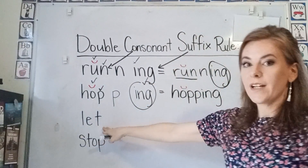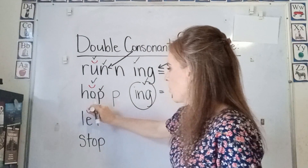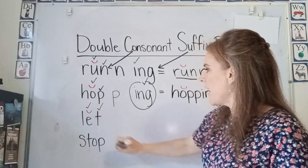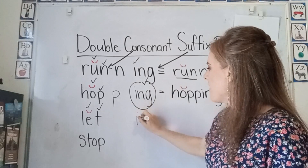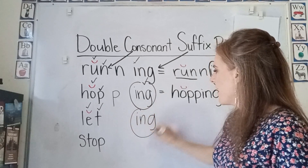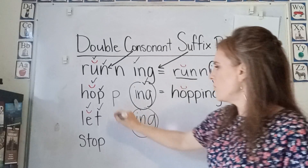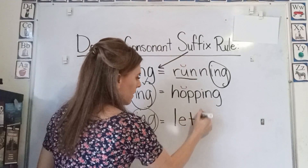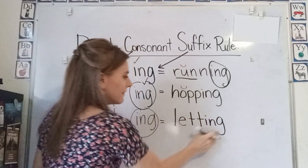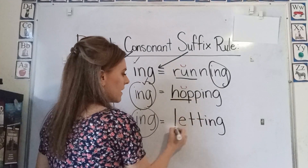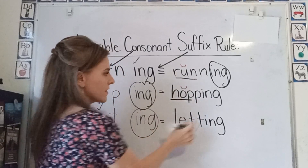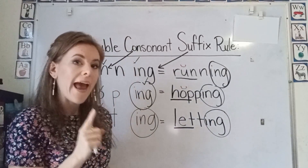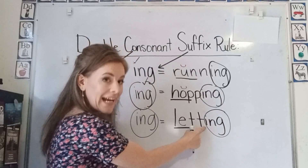Now here we have the word let. It is a short vowel. We have one consonant at the end. And we're going to add a suffix that begins with a vowel. So we're going to double the consonant and we will get letting. Now with these, these are our root words. These are our suffixes. The P and the T are only added when you're adding a suffix that begins with a vowel.